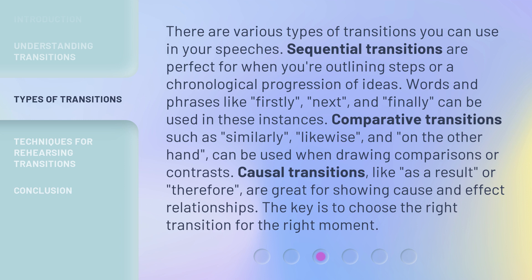Comparative transitions such as similarly, likewise, and on the other hand, can be used when drawing comparisons or contrasts. Causal transitions like as a result or therefore are great for showing cause and effect relationships. The key is to choose the right transition for the right moment.